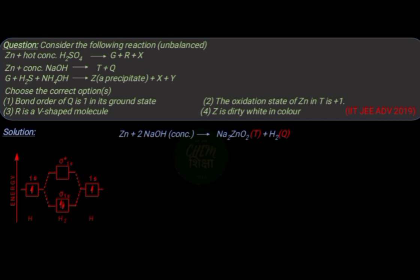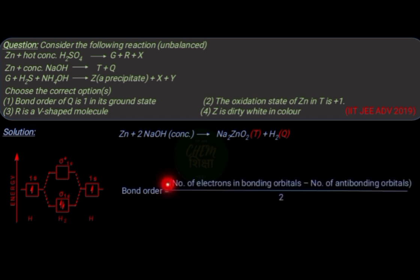The bond order is calculated as number of electrons in bonding orbitals minus number of electrons in antibonding orbitals, divided by 2. As the number of electrons in bonding orbitals is 2 and no electron is present in antibonding orbital,